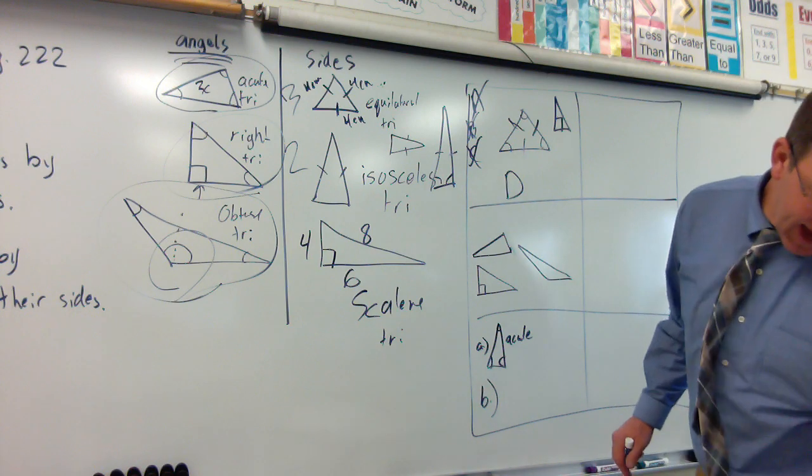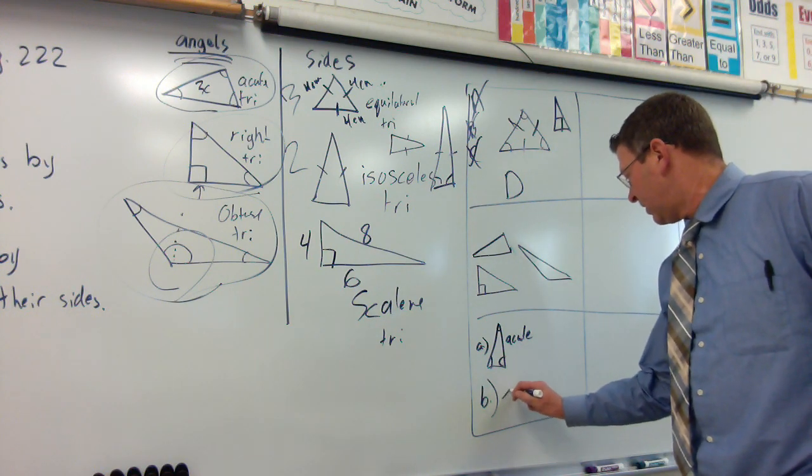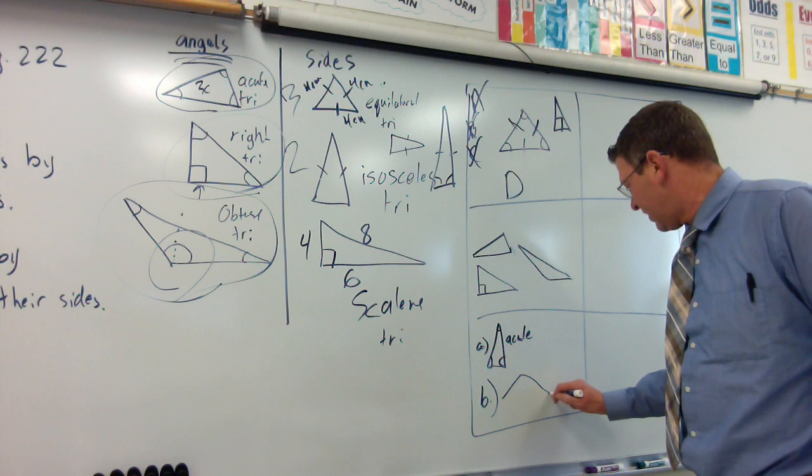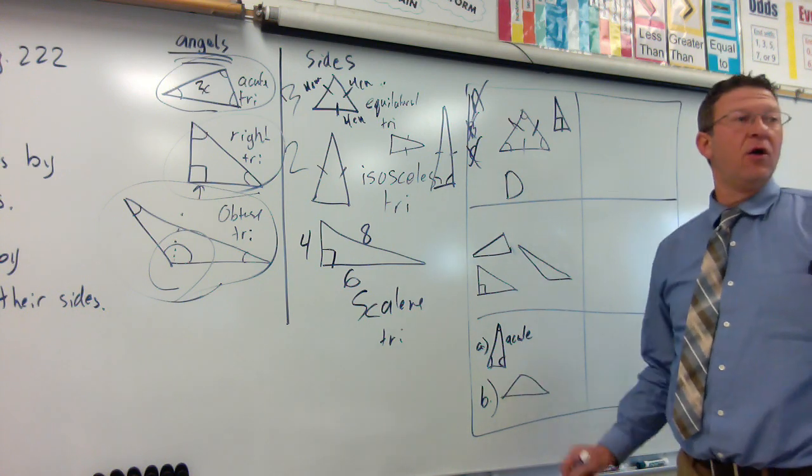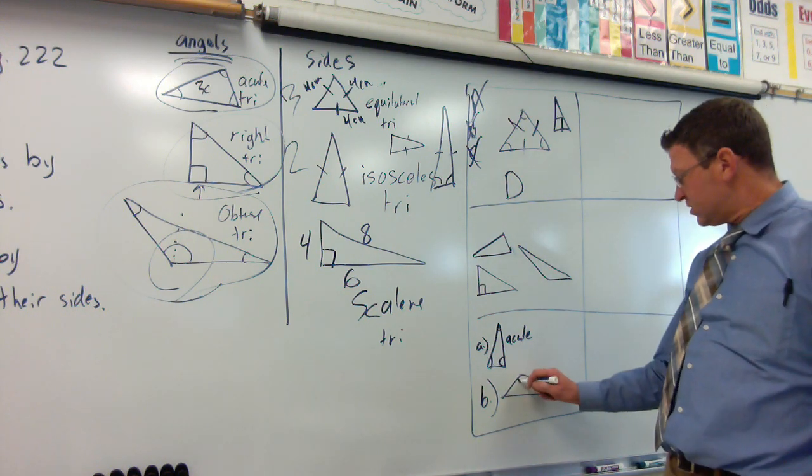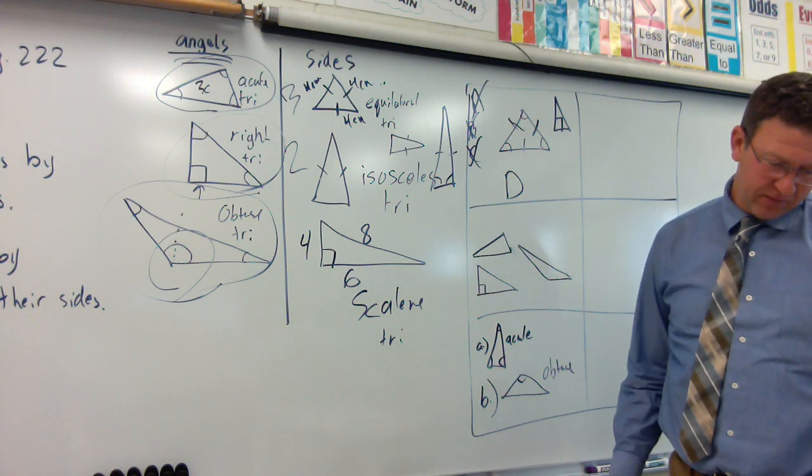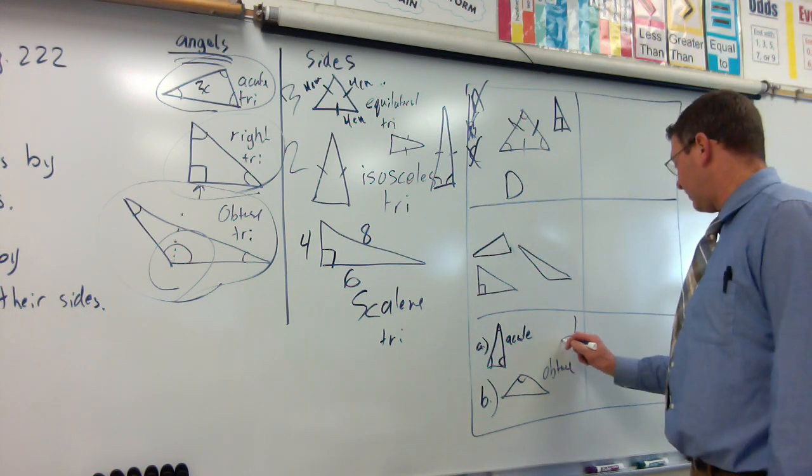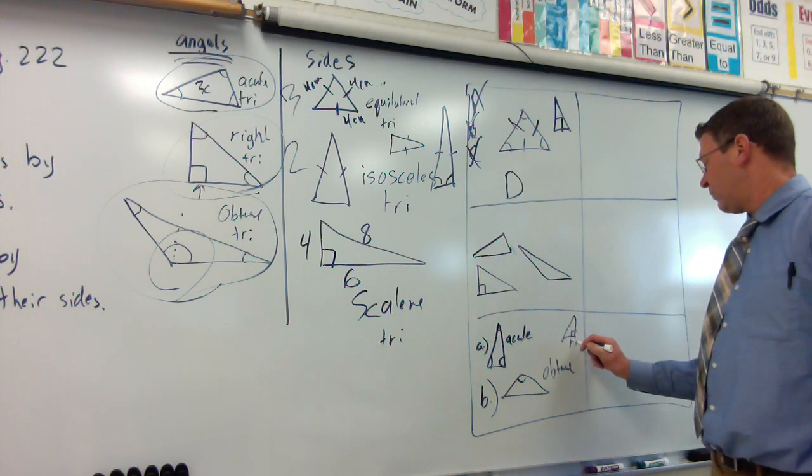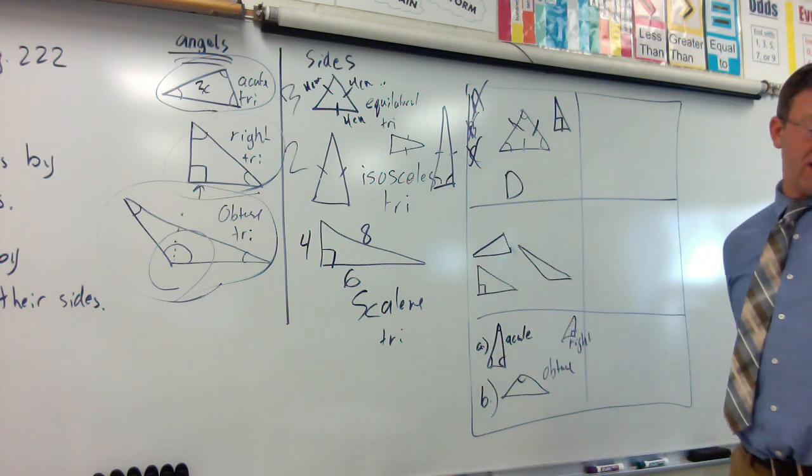Look at B. B has one small angle here, one big angle there, and a small angle over there. One obtuse angle would make that an obtuse triangle. And then the last one, obviously, you see the right angle in there. So, this would be your right triangle.